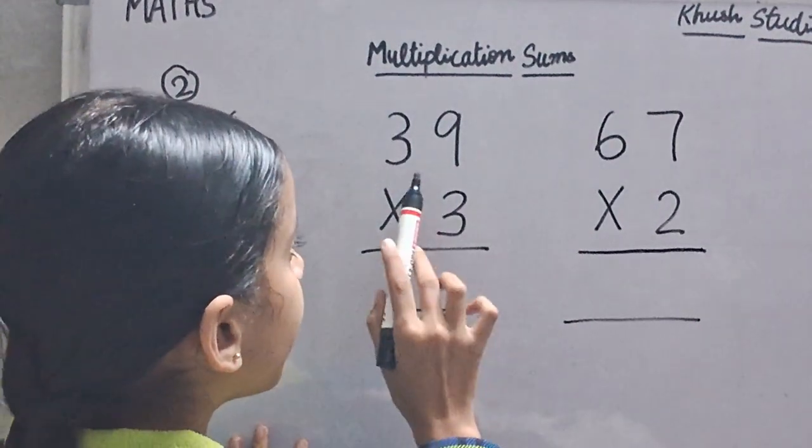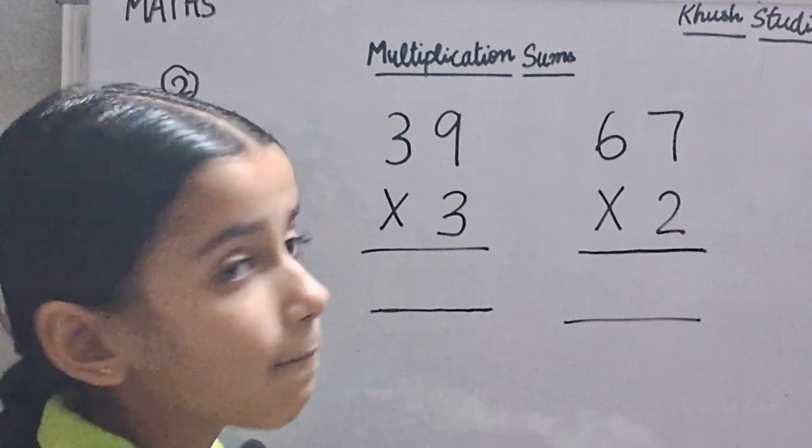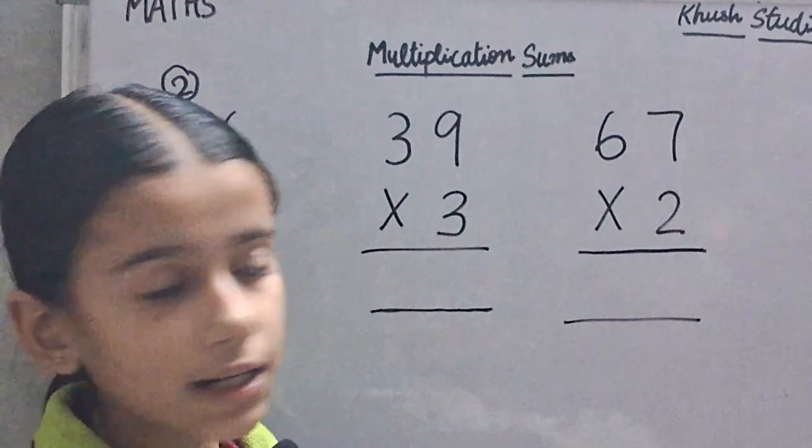Now we will multiply 39 multiply by 3. First we will multiply 9 by 3. 9 threes are 27.